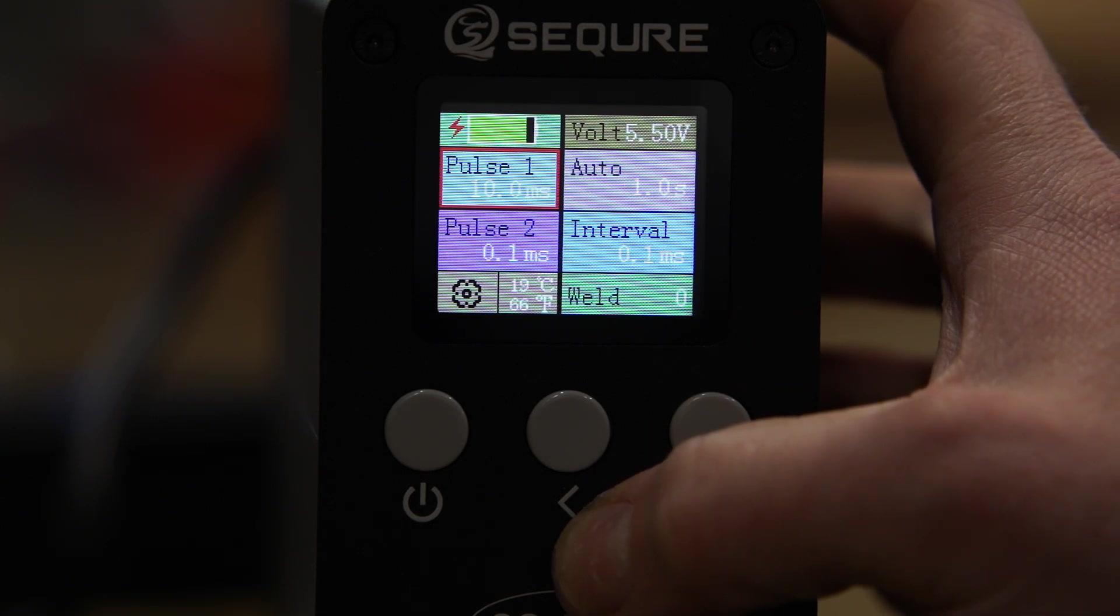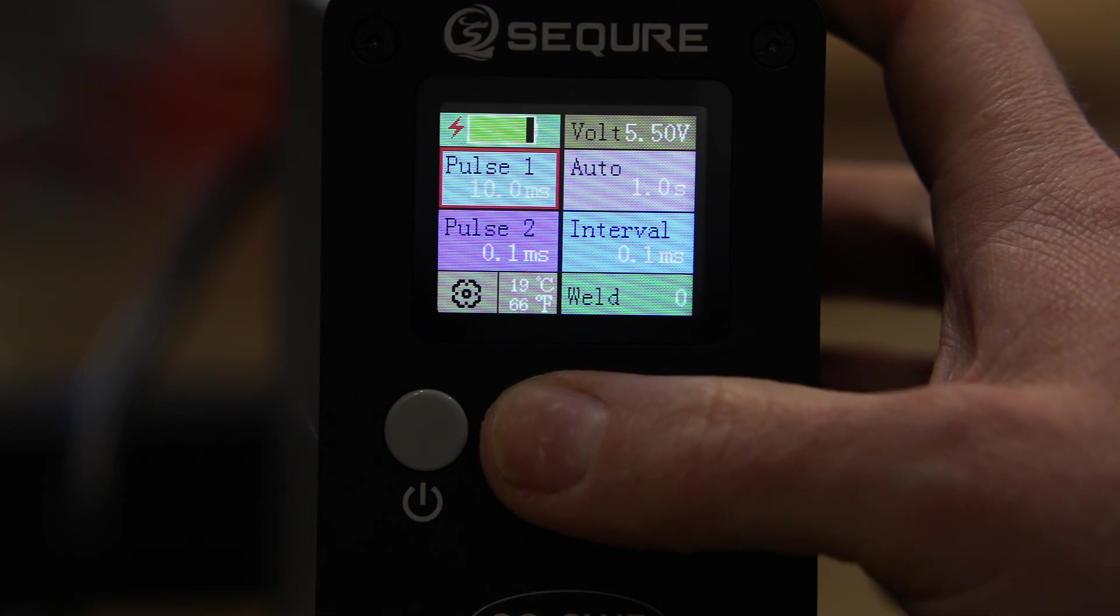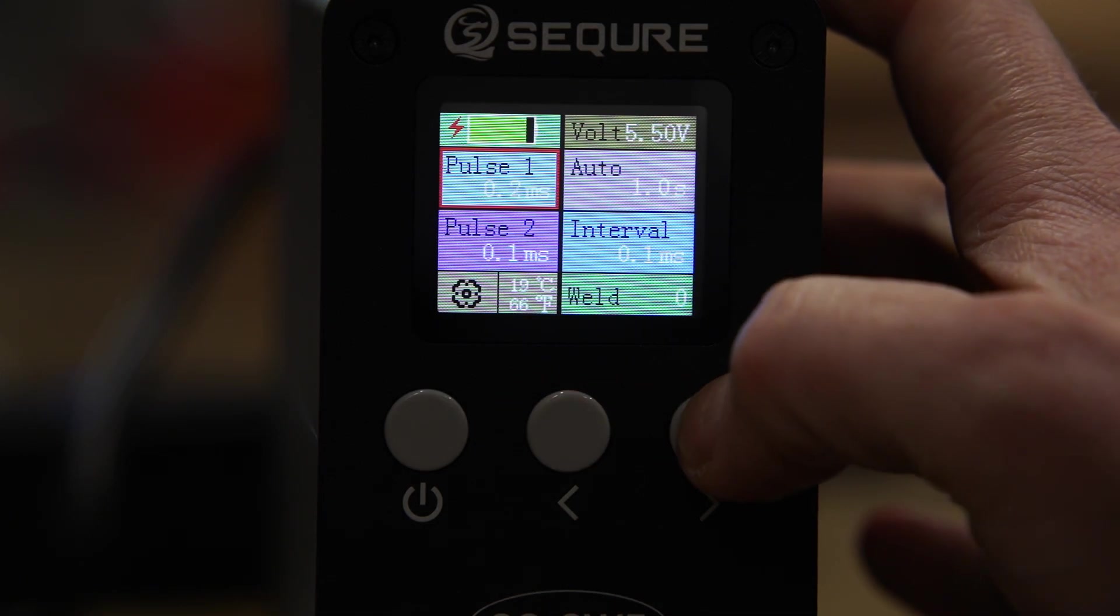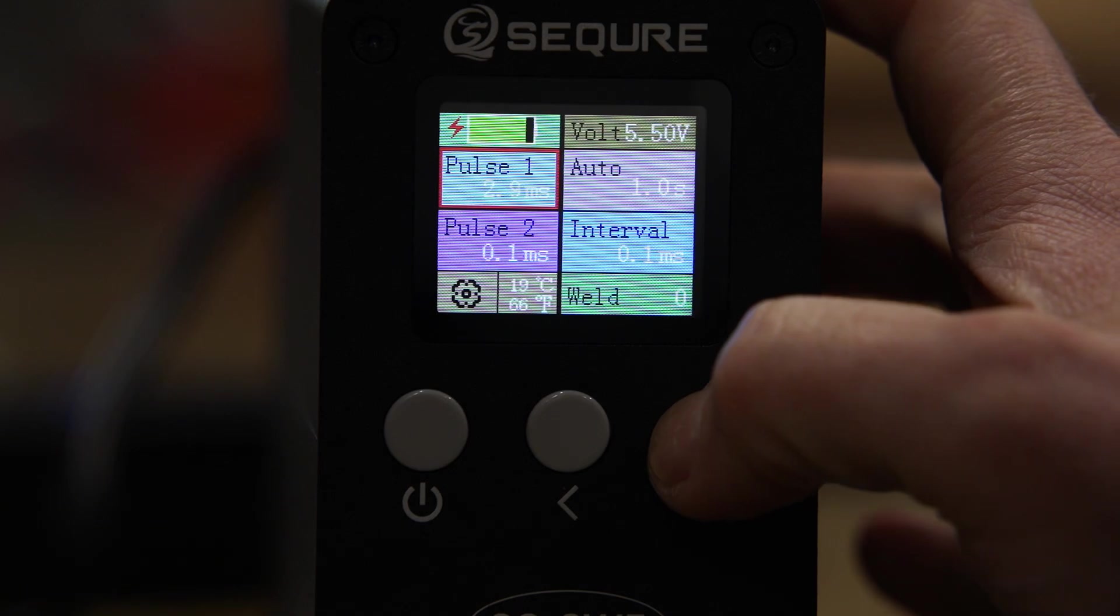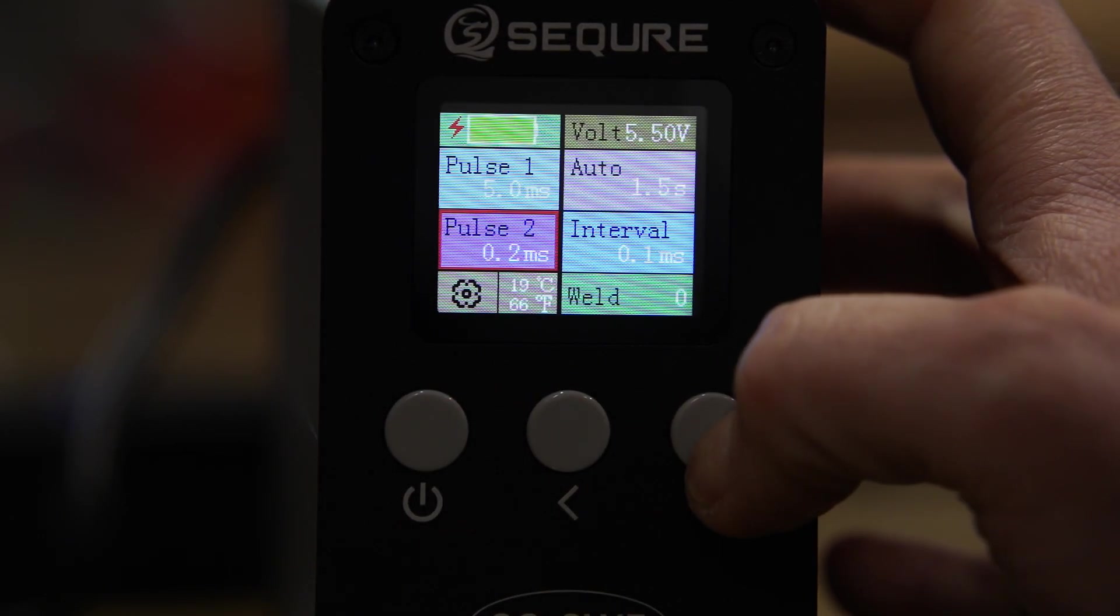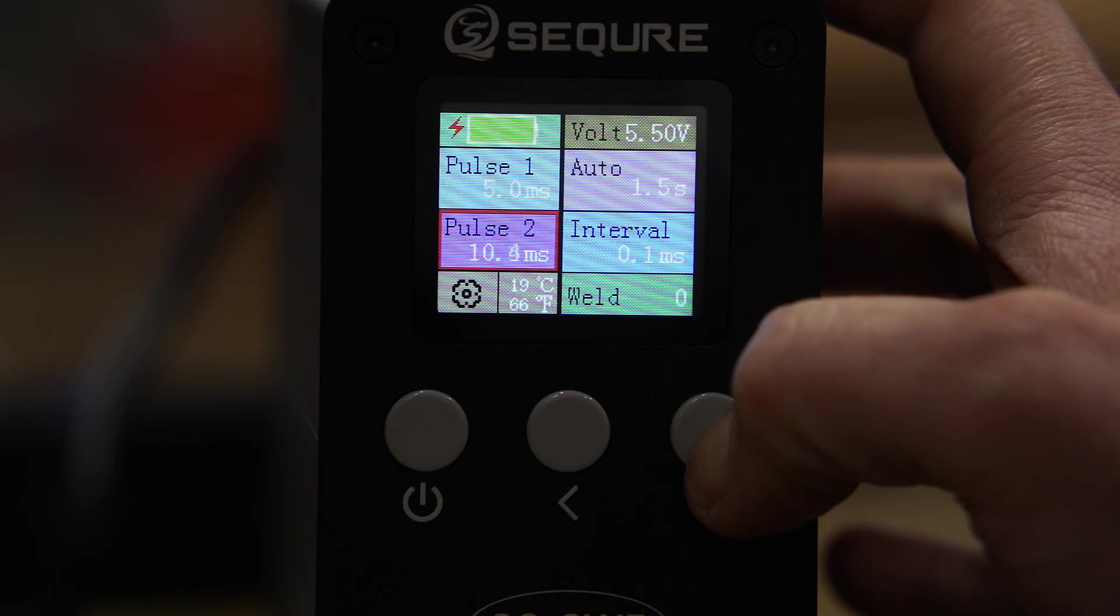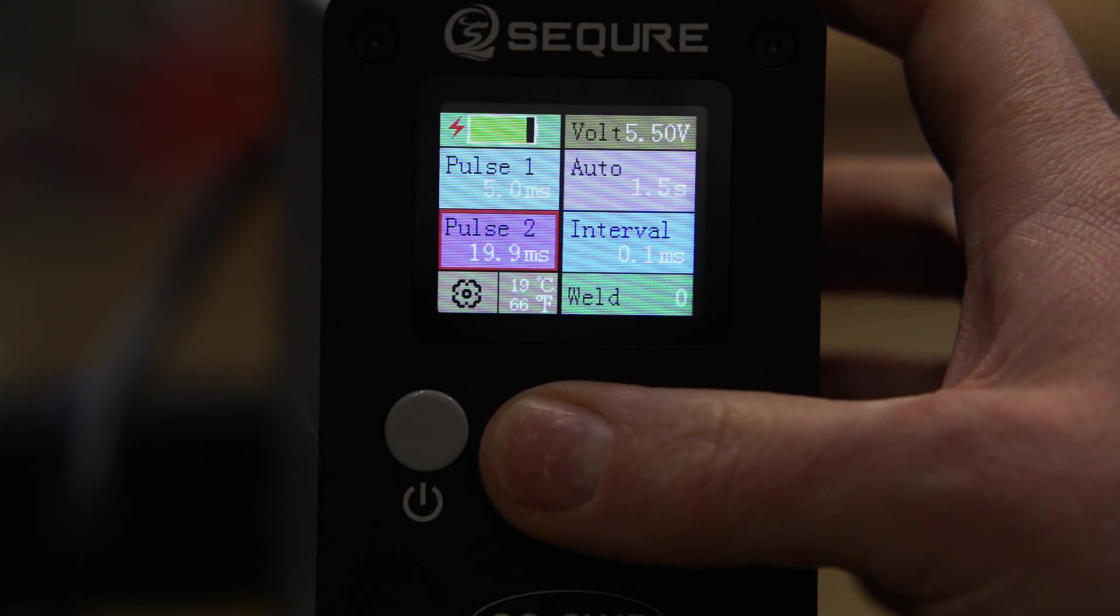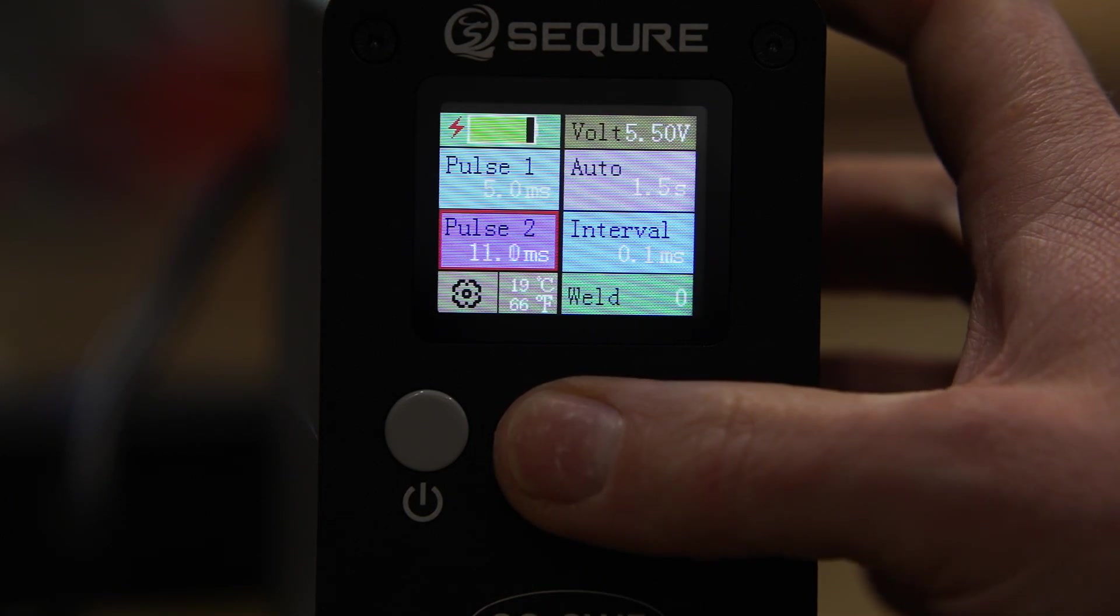There are several benefits to dual pulse spot welders. But without getting into too much detail, the first pulse is shorter and its purpose is to preheat the metal and remove surface oxides. This prepares the metal for the second longer pulse, which melts the metals together. In a nutshell, dual pulsing produces stronger welds and reduces the risk of burn through.